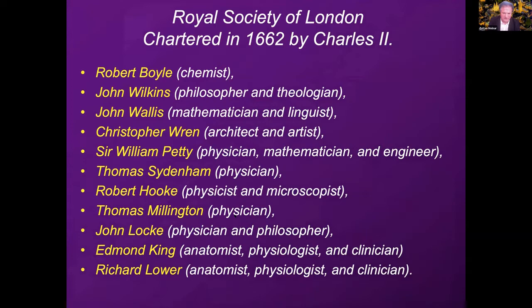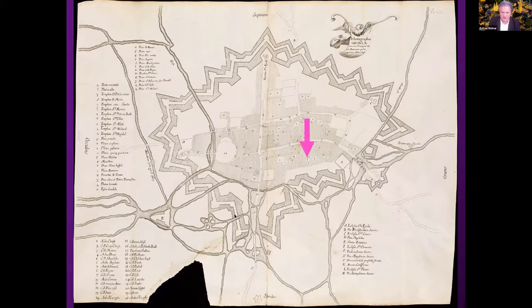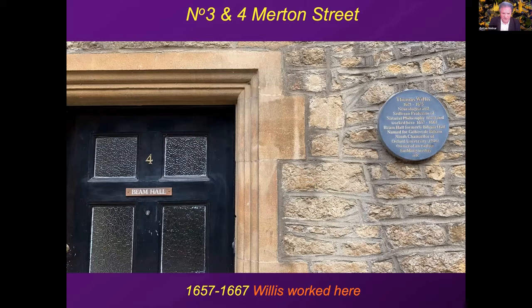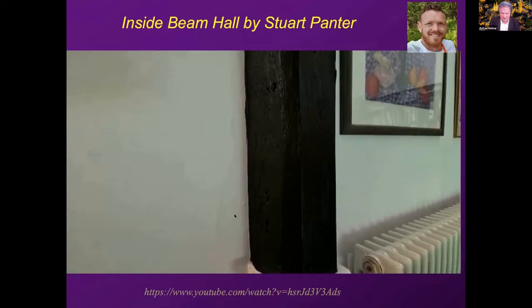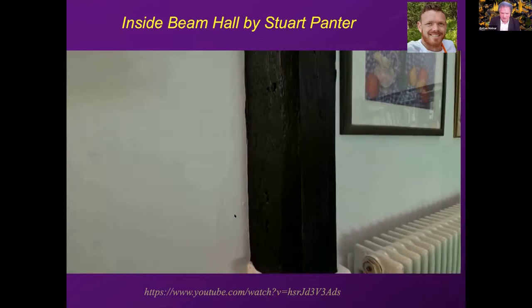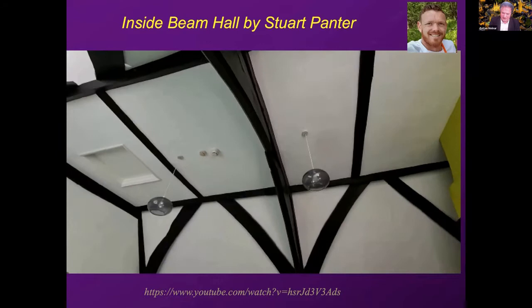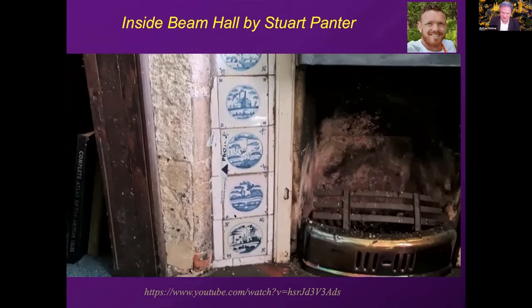Willis then moved to Merton Street, opposite Merton's lodging. It's still debated whether he lived in number three or worked in number four, but these two buildings are connected. Now they are owned by Corpus Christi College. He had an extremely productive time here. This building is called Beam Hall, but the official name is really Beham Hall, after Gilbert de Beham, who was the ninth chancellor of Oxford University. The name 'Beam' came from the wooden beams you can see inside the building — it was also called Aula Trabina, meaning 'made of wood.' It's really humbling to see these rooms; not a lot has changed since Willis was resident here.